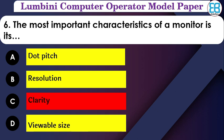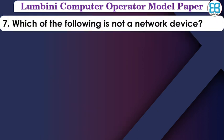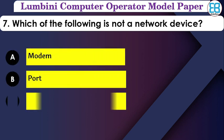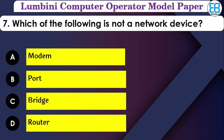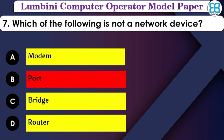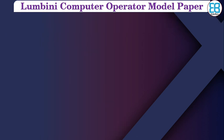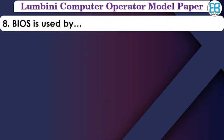Which of the following is not a network device? Out of the options given, we identify which one is not a network device. A medium would be used by others — the correct answer is identified among the options.